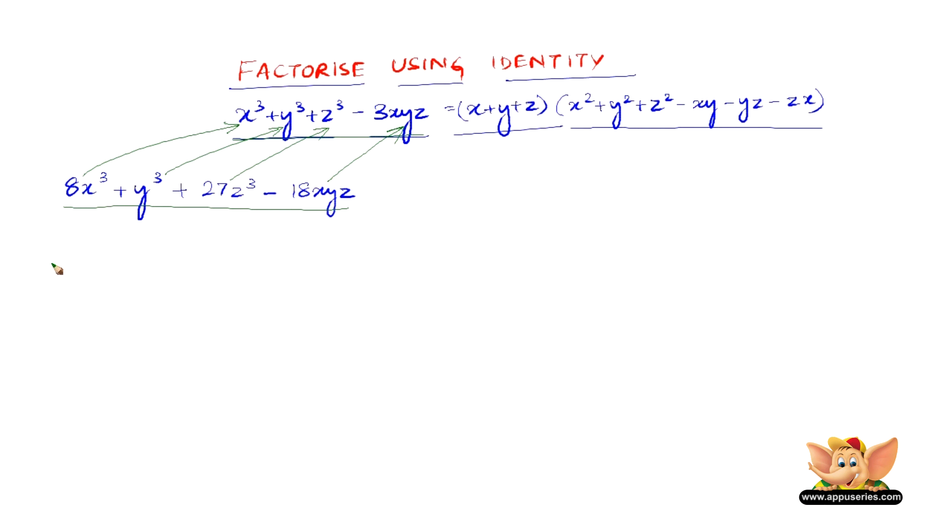We can write 8x³ as (2x)³ and y³ as y³ plus 27z³ as (3z)³ minus 3xyz. We need to write the 3 as it is because it is a constant.